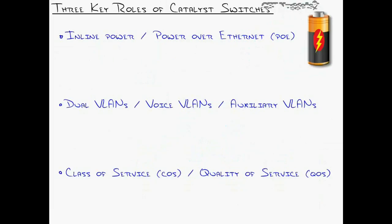The first area I'd like to talk about focuses around the Catalyst switch. The Catalyst switch plays new key roles in the Voice over IP environment. It may require upgrading a lot of your switches to get some of the later and greater features. The three key roles of Catalyst switches are: number one, to provide inline power or Power over Ethernet. This means the switch has the ability to power an inline-power-compatible device — which could be a phone, a wireless access point, or a video camera.